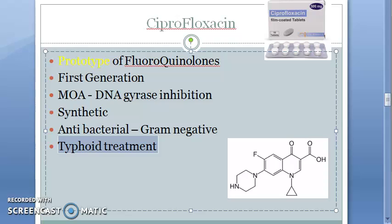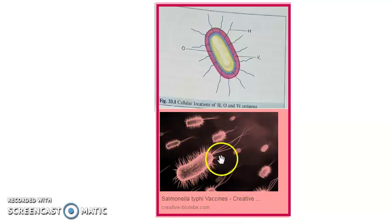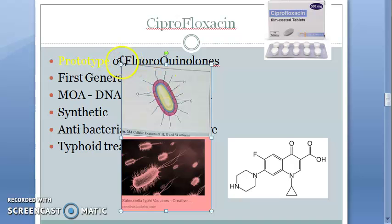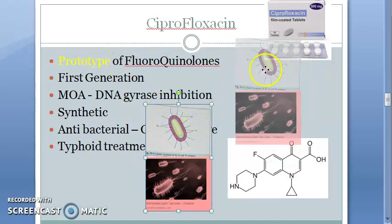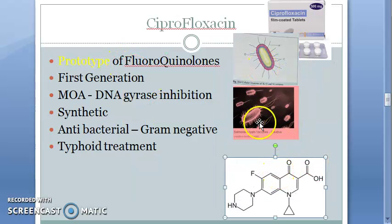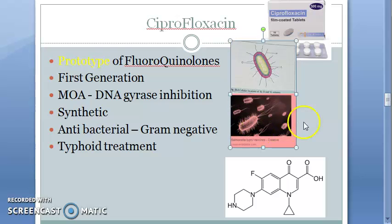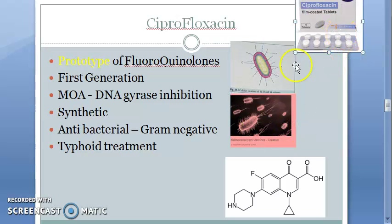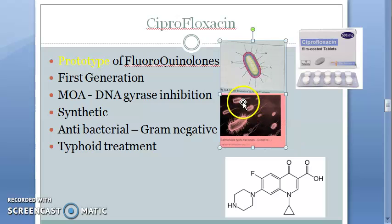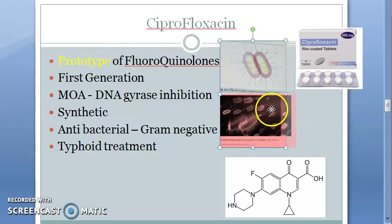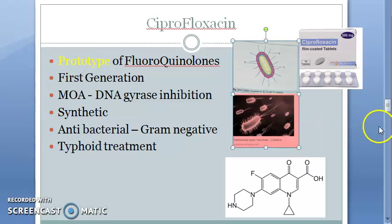Ciprofloxacin is used in typhoid treatment. Salmonella typhi — is it gram-positive or gram-negative? Salmonella typhi is gram-negative. That is why ciprofloxacin, being first generation, is active against gram-negative bacteria.